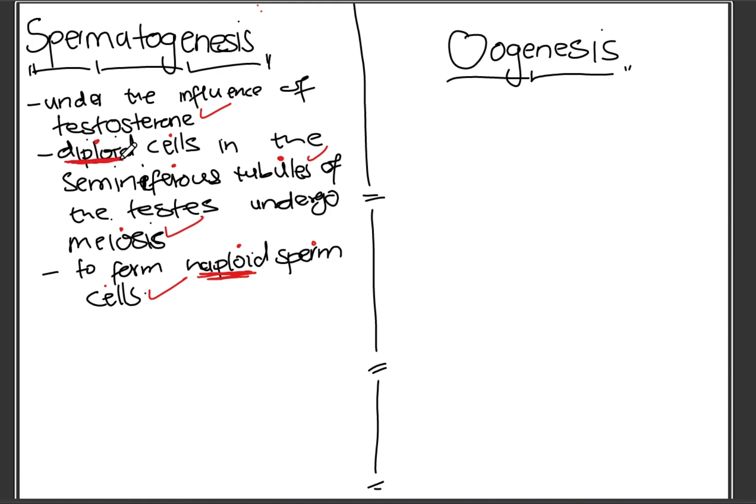Everything here comes from the exam guideline, so it's very important that you say it exactly like this in order to get the marks. You need to say 'diploid cells' — if you just say 'cells' that is incorrect.